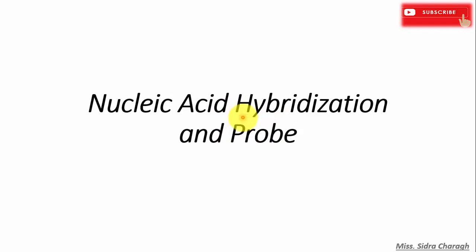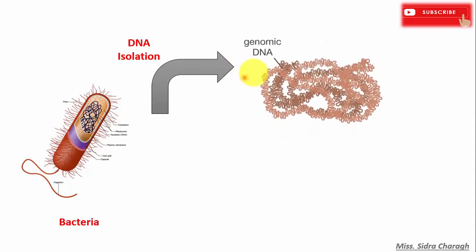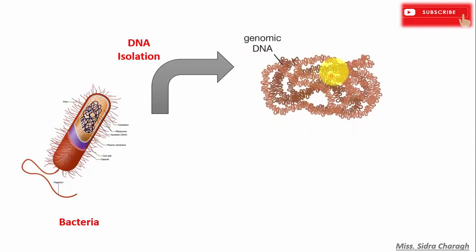We will discuss nucleic acid hybridization. Suppose we have isolated genomic DNA from bacteria and we know that this DNA contains thousands of genes or DNA sequences encoding various proteins in bacteria. Now we want to find out the presence of specific DNA sequences in this bacterial genome.